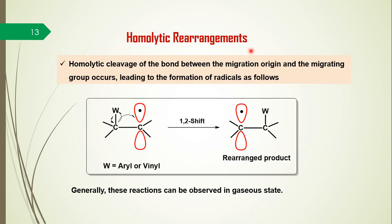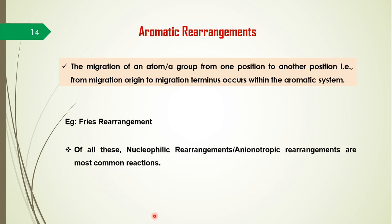In homolytic rearrangements, the initial fragmentation between the migrating group and migration origin is a homolytic cleavage, which generally leads to the formation of radicals. So homolytic rearrangements are also considered radical rearrangements. The migration origin is a radical, the migrating group is a radical, and the migration terminus is also a radical. These reactions are generally observed in the gaseous state, because the gaseous state generally gives free radicals.